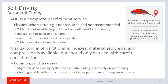Number two: in general, indexes should not be used on tables for performance reasons. Autonomous Database and the Exadata platform provide automatic enhanced indexing for data retrieval that in most cases performs better than manual indexing. Number three: Autonomous Databases use compression of data in the database, so additional compression does not need to be used. Number four: in-memory tables cannot be used in Autonomous Database. Number five: table spaces do not need to be created. Manual tuning of partitioning, indexes, materialized views, and compression is available but should only be used with careful consideration, such as in cases where migration of an existing system whose data loading scripts rely on partitioning, or indexing is used for referential integrity.